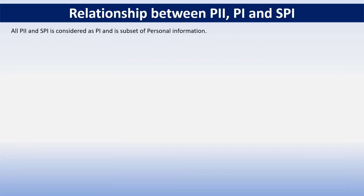The definition of personal data or personal information might change if we move to different continents or different places. These terms may change as per geographical locations, different laws, and different sectors in which organizations are operating. For example, for hospitals or medical institutions, patient information is very sensitive. Similarly, for banking and financial institutions, account details, credit card or debit card information, and transaction details are very sensitive. So for different sectors, there can be different sensitive data.